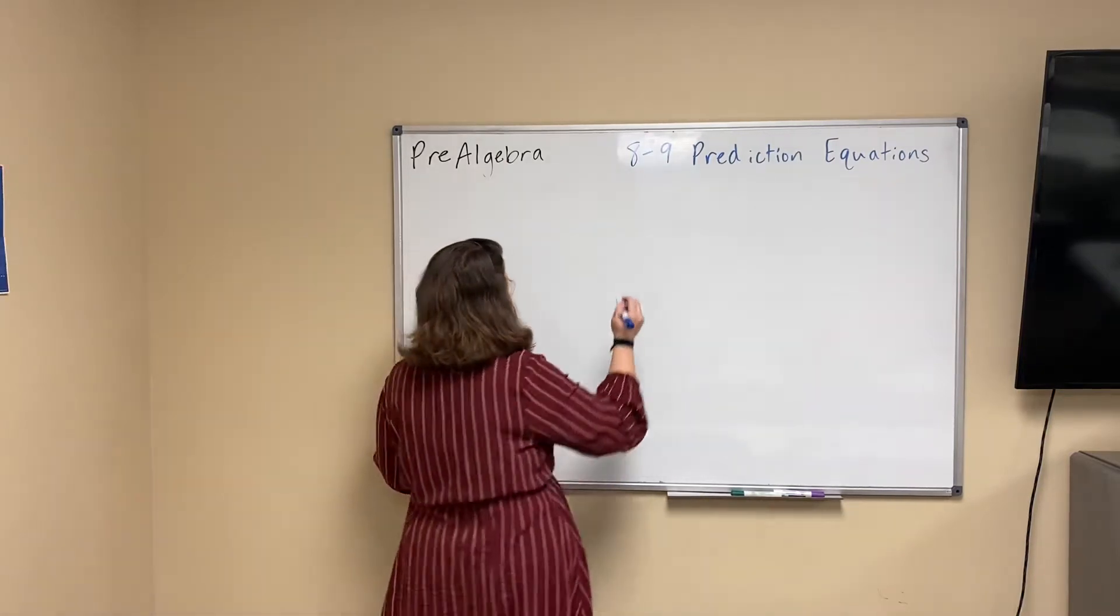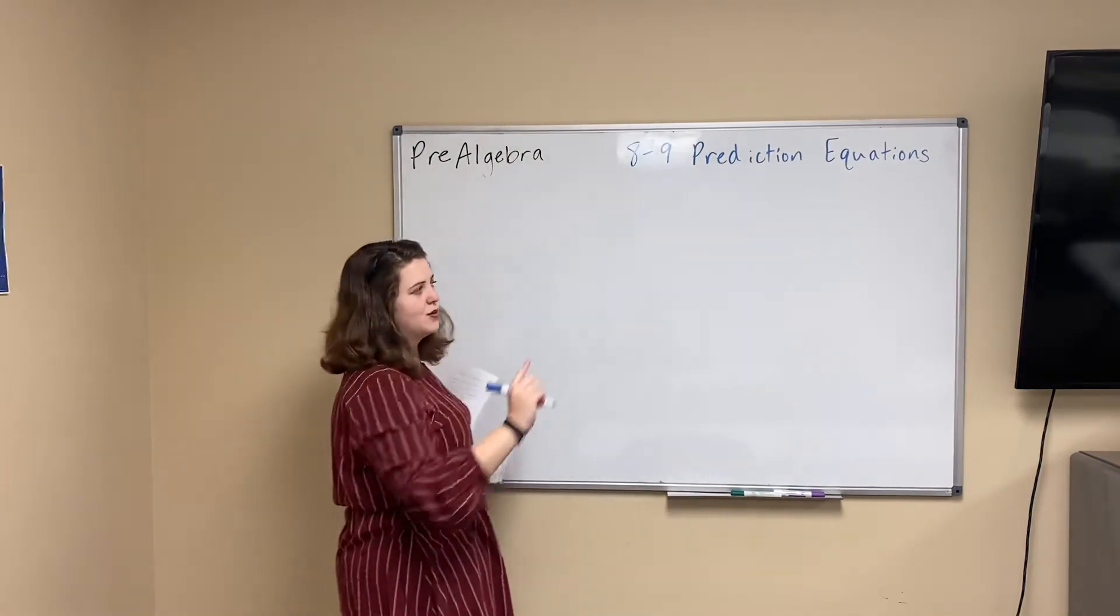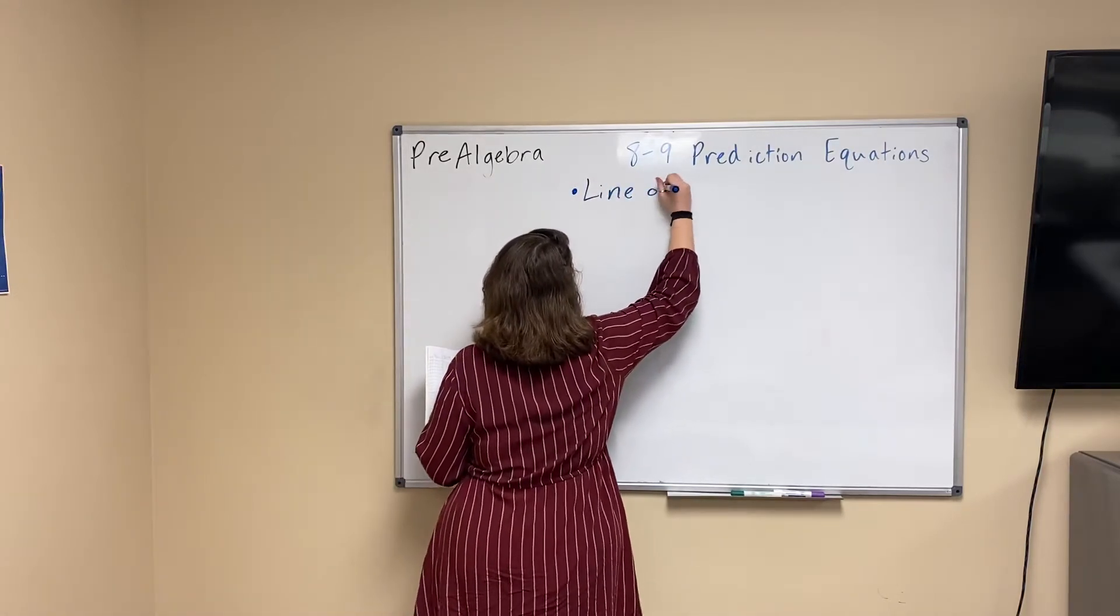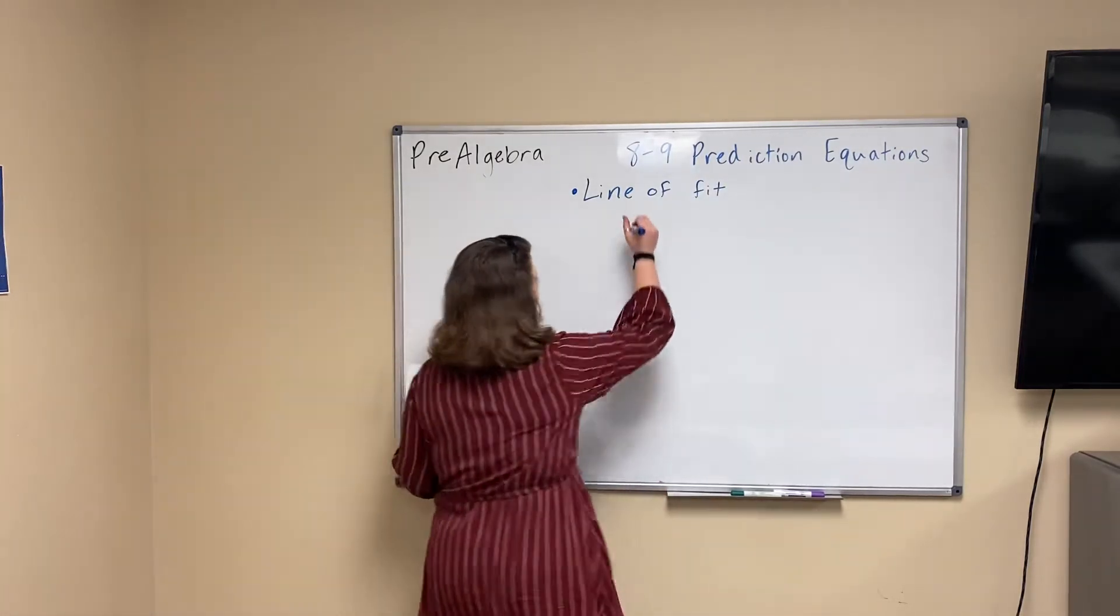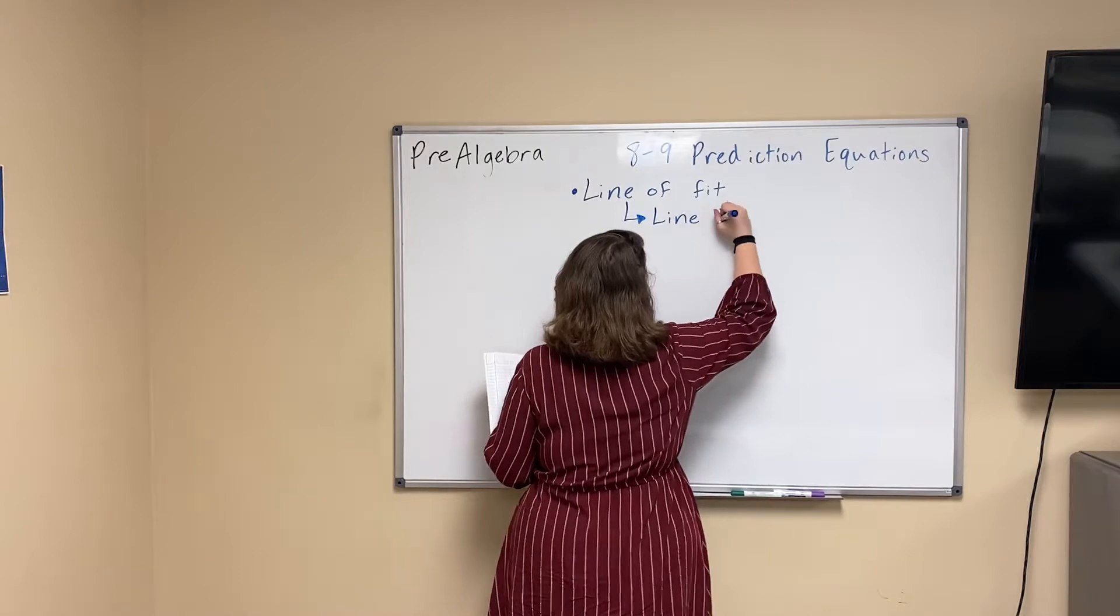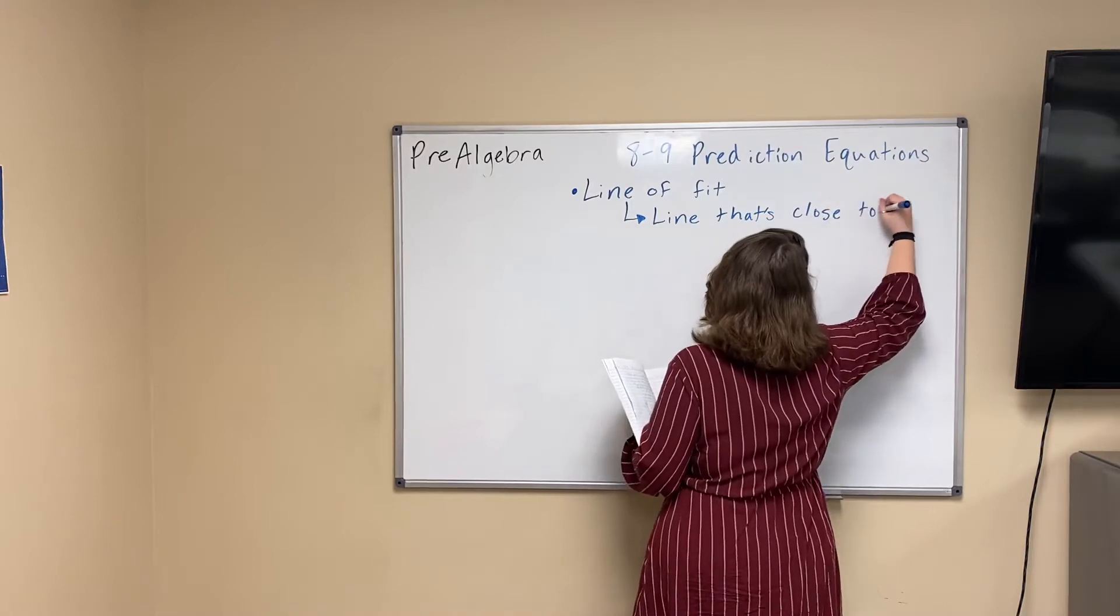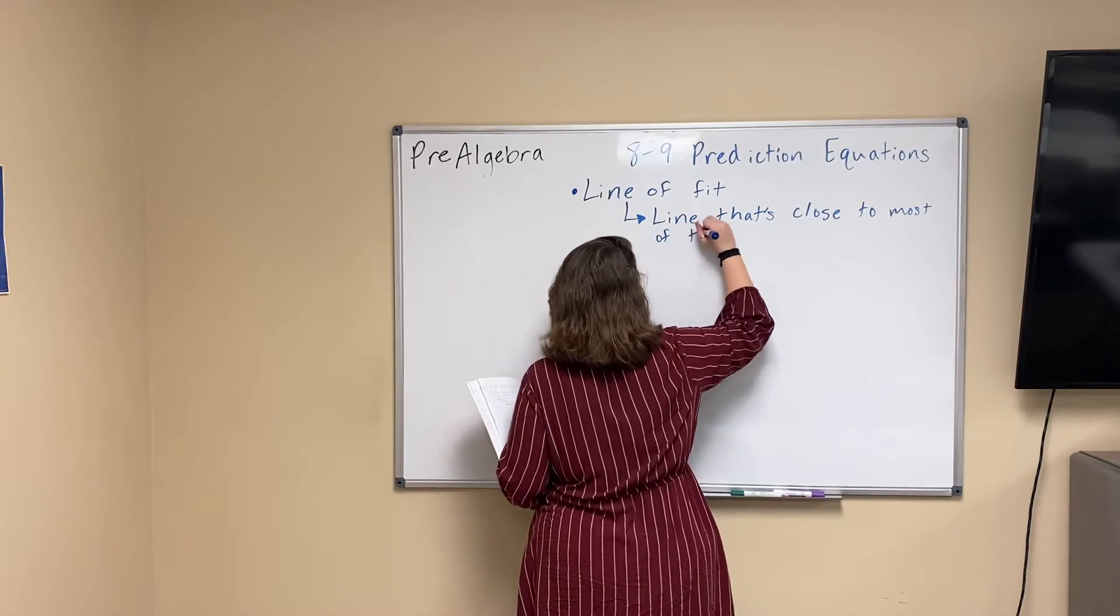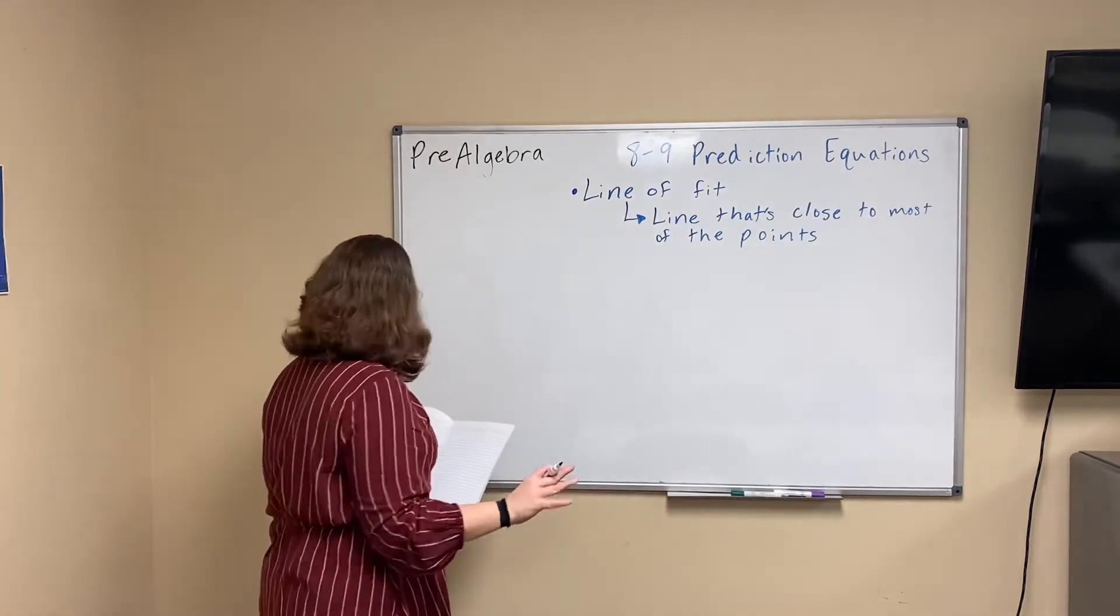So whenever we don't have points that line up exactly in a line, what we're going to do is draw what we call a line of fit. Now, a line of fit is going to be, when we're looking at a whole bunch of different points, it's going to be a line that's close to most of the points. I'll draw a graph so that it makes a little bit more sense.